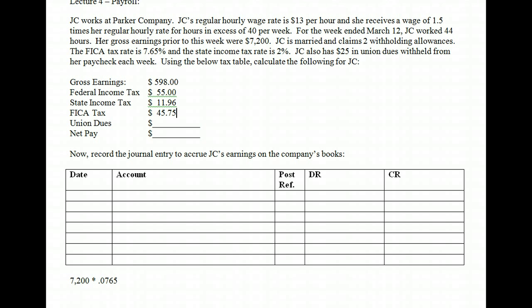After we calculate FICA taxes, the next thing to consider is union dues. Our employee has $25 of union dues withheld each period. These are what are called voluntary deductions — a straight pass-through. For example, if you have health insurance through your company and pay a portion of the premium, that comes out of your paycheck. That's not revenue to the company; it's simply a payable, and the company pays it to the insurance provider when the monthly premium is due.